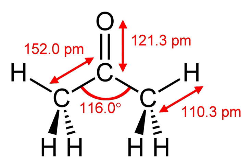Previously, acetone was produced by the dry distillation of acetates, for example calcium acetate in cationic decarboxylation. During World War I, acetone was produced using acetone-butanol-ethanol fermentation with Clostridium acetobutylicum bacteria, which was developed by Chaim Weismann — later the first President of Israel — in order to help the British war effort in the preparation of cordite. This acetone-butanol-ethanol fermentation was eventually abandoned when newer methods with better yields were found.